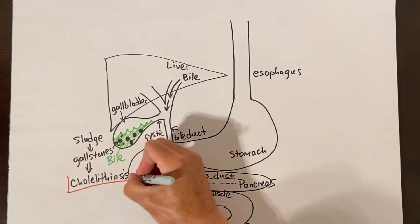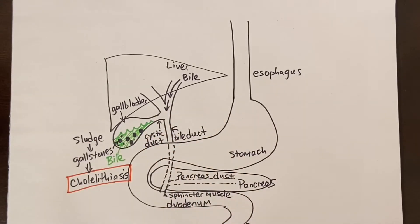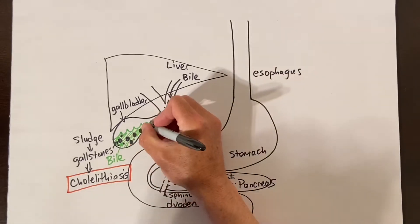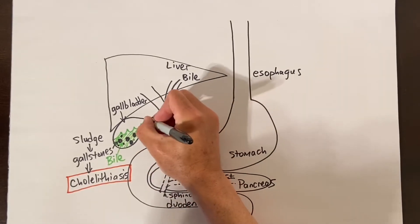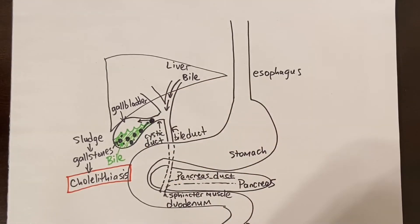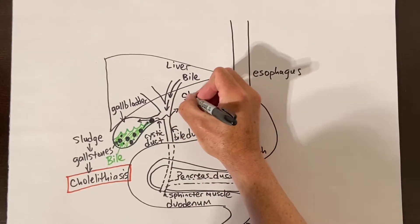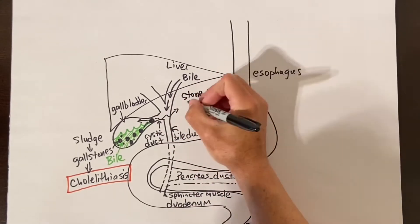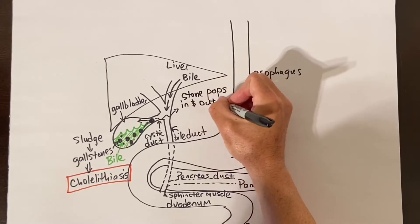The term for gallstones in the gallbladder is cholelithiasis. Not everybody with cholelithiasis will have problems or even know they have gallstones. Symptoms occur when the stones get stuck in the cystic duct and prevent the gallbladder from emptying properly when it squeezes. It is like a ball valve mechanism that blocks the emptying of the gallbladder where it connects to the cystic duct.